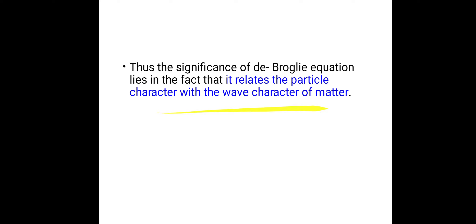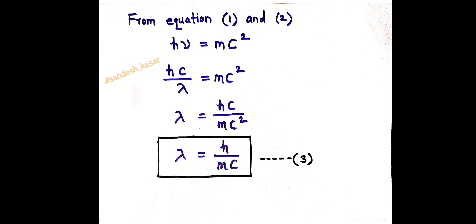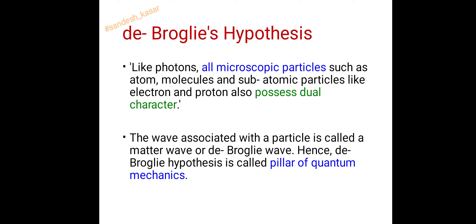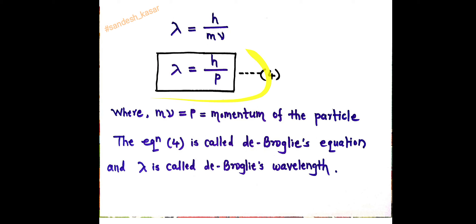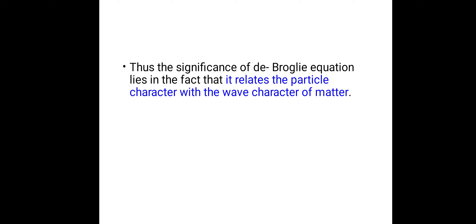In today's lecture, we studied de Broglie's hypothesis: like photons, all microscopic particles such as atoms, molecules, and subatomic particles like electron and proton also possess dual character — wave-like as well as particle-like. We proved this using the energy equations E = hν and E = mc², arriving at de Broglie's equation λ = h/p, which relates particle character with wave character of matter. Thank you.